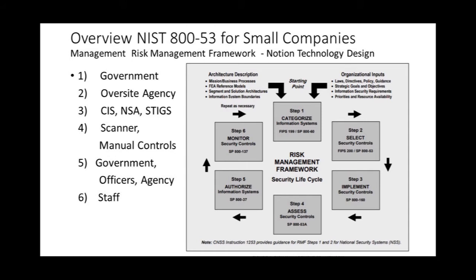Once you put those controls on your system, you need to assess them to make sure they're working at an optimal level and actually doing what they're supposed to do. Then step five is when the oversight agency authorizes your system — they come in, access your system, and say they accept or deny the controls you put on there. That's usually an ATO — authority to operate. If they give you an ATO, you have authority to operate that authorized system for that agency.